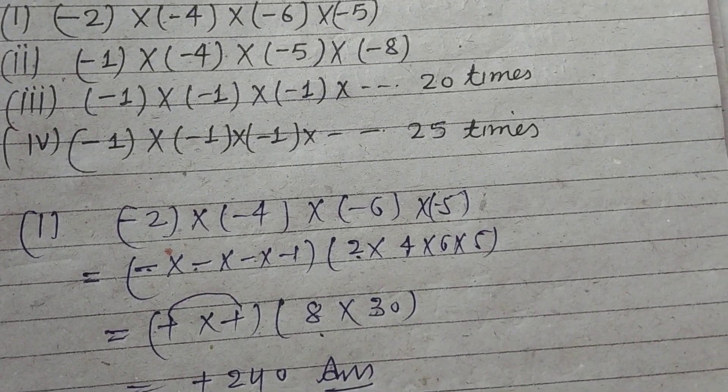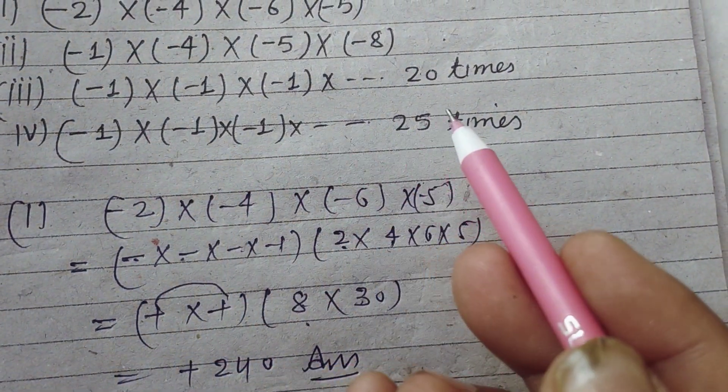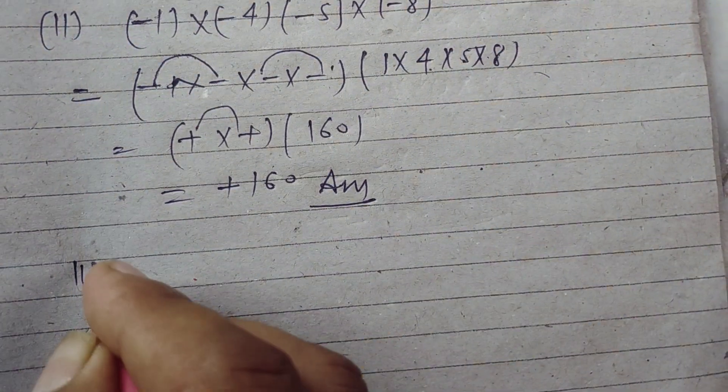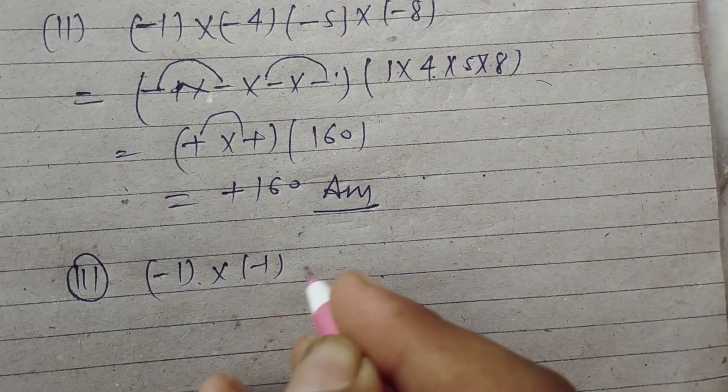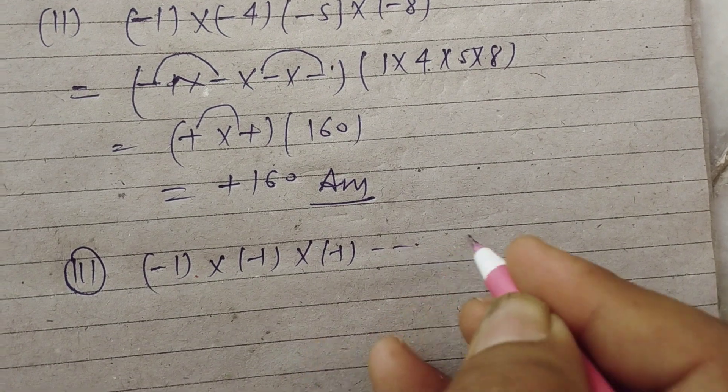Now third is (-1) × (-1) × (-1)... 20 times. So third is (-1) × (-1) × (-1) multiplied 20 times.